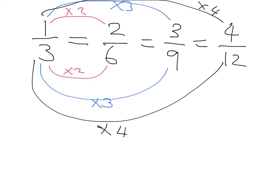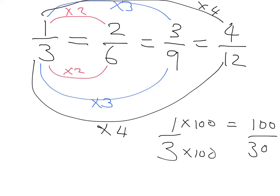I could also find another equivalent fraction by multiplying the top and the bottom of this fraction by any number I want to. Let's multiply by a hundred. As long as I multiply the top and the bottom by the same thing, I will have an equivalent fraction. So one over three — one third — is exactly the same number as 100 over 300.